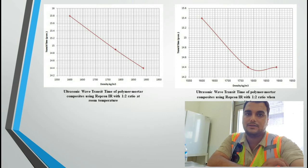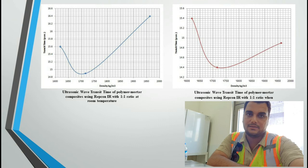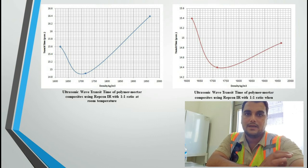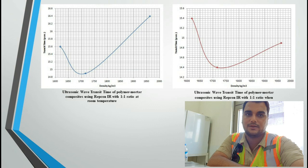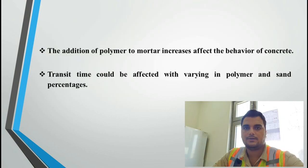Polymer mortar composites with variations in proportion of cement to sand and polymer to mortar ratios give high wave transit time. This behavior can be understood by the voids contained in the specimen due to lack of polymer penetration in the mortar and low density. The composite that gives the best results is due to good permeability of epoxy between mortar particles, minimizing voids. All specimens tested for ultrasonic pulse velocity ranged between 13.9 microseconds to 16.4 microseconds, indicating homogeneity of the composites.